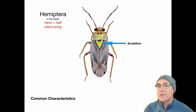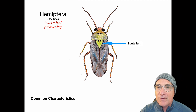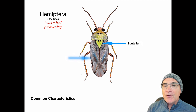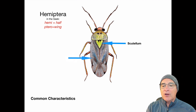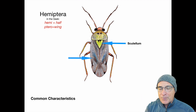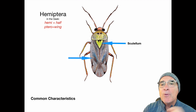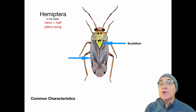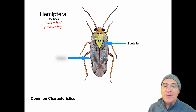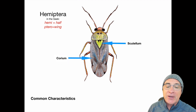That little triangular piece is called the scutellum. The scutellum provides some protection, but it's also a way to identify species within this order. If you look on the outside of the scutellum, you'll notice some protective plates — exoskeleton — and they protect the wings. Two-thirds of the wings are covered by this part.